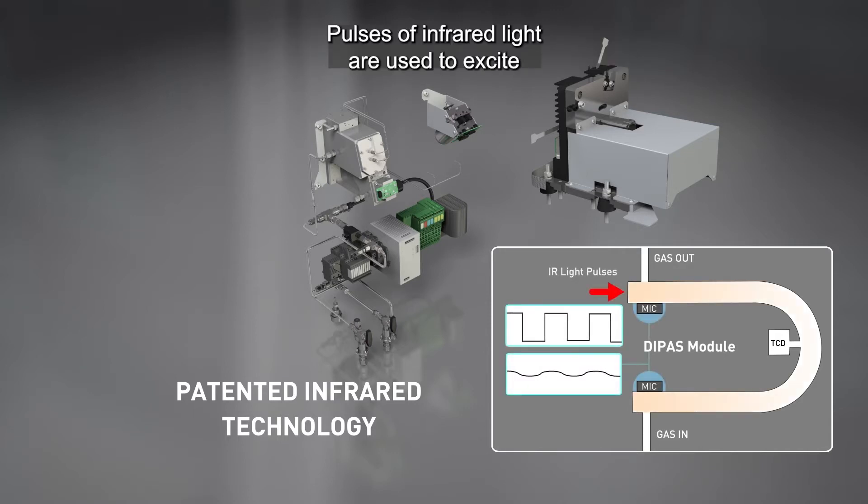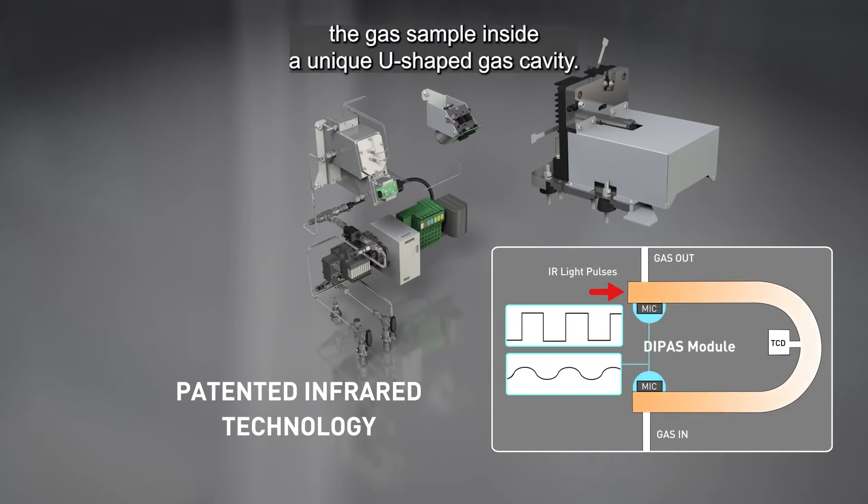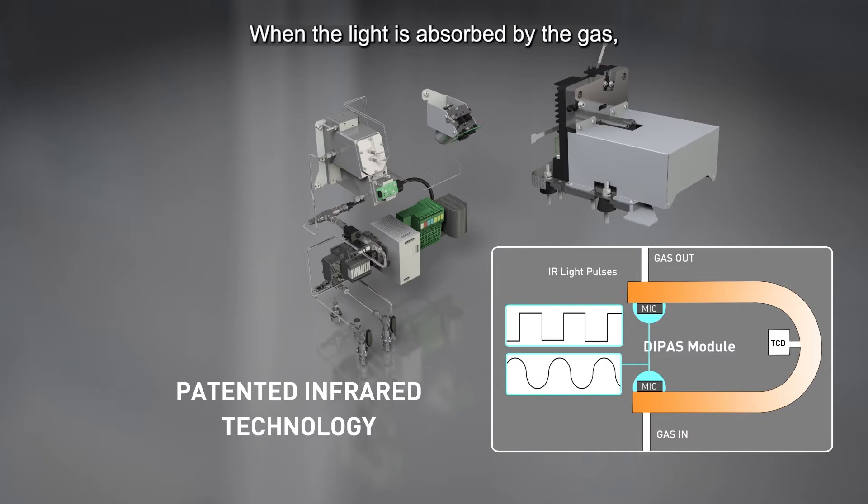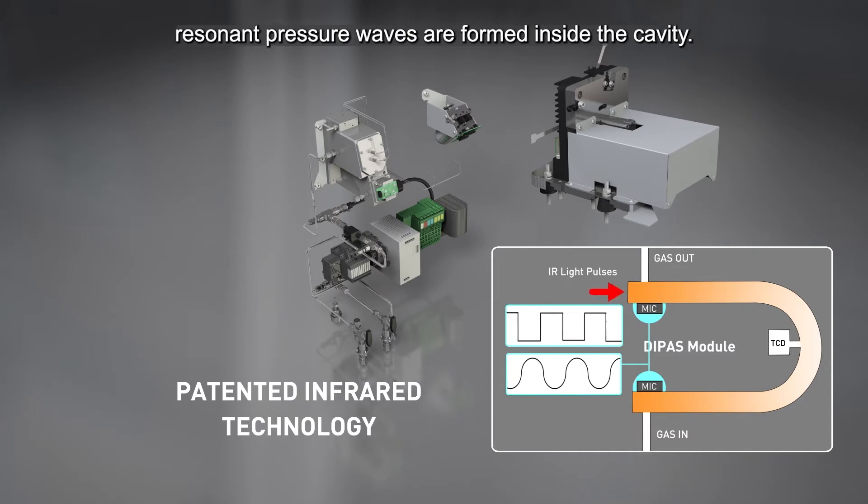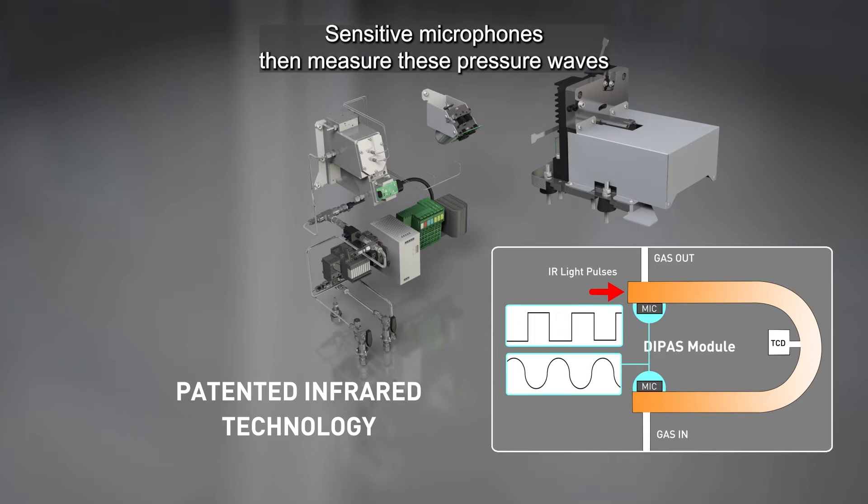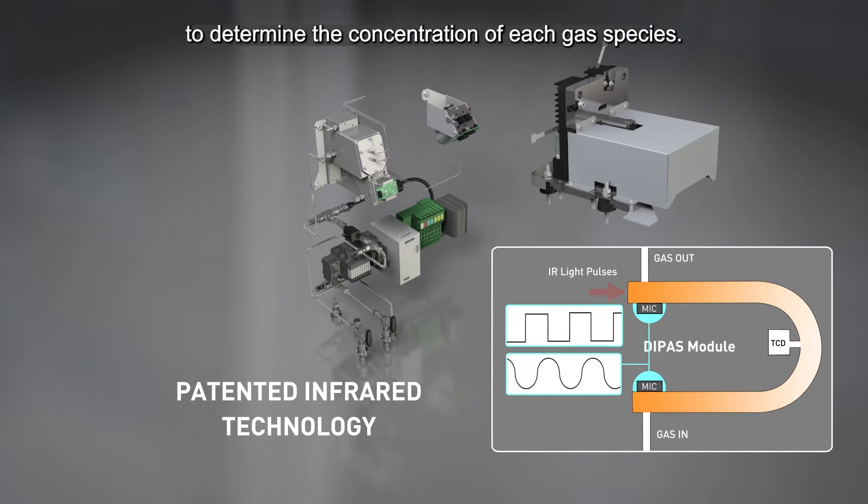Pulses of infrared light are used to excite the gas sample inside a unique U-shaped gas cavity. When the light is absorbed by the gas, resonant pressure waves are formed inside the cavity. Sensitive microphones then measure these pressure waves to determine the concentration of each gas species.